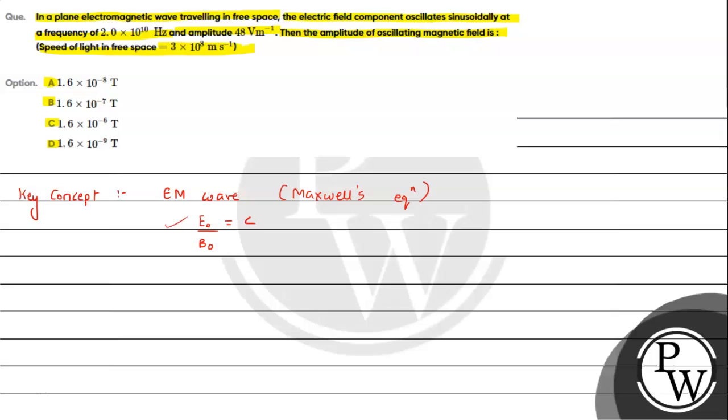We have the amplitude and need to find B₀, therefore we can write B₀ = E₀/c. Now, E₀ is given as 48 divided by c which is 3×10^8, so this will be 16×10^-8